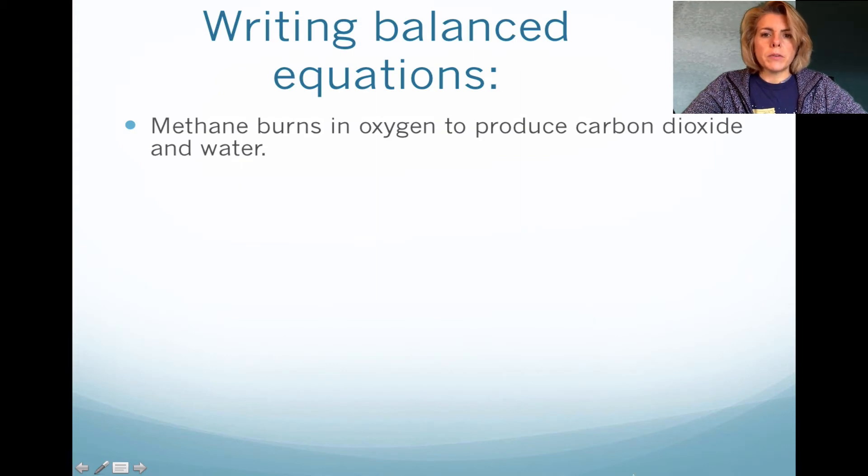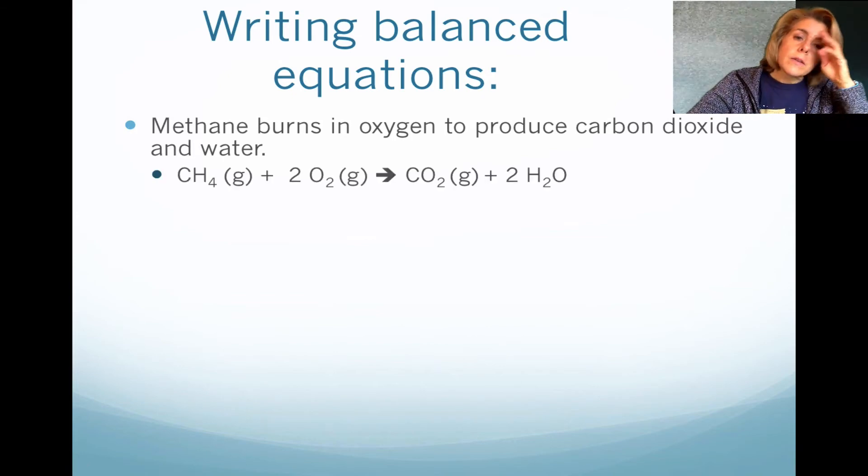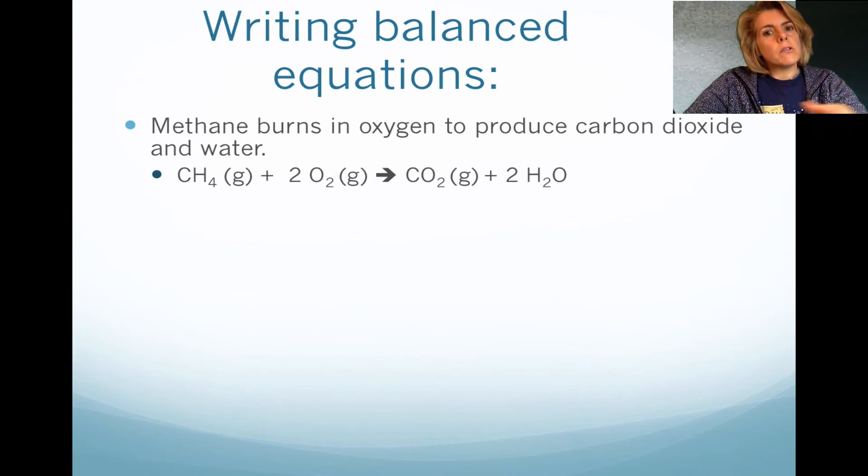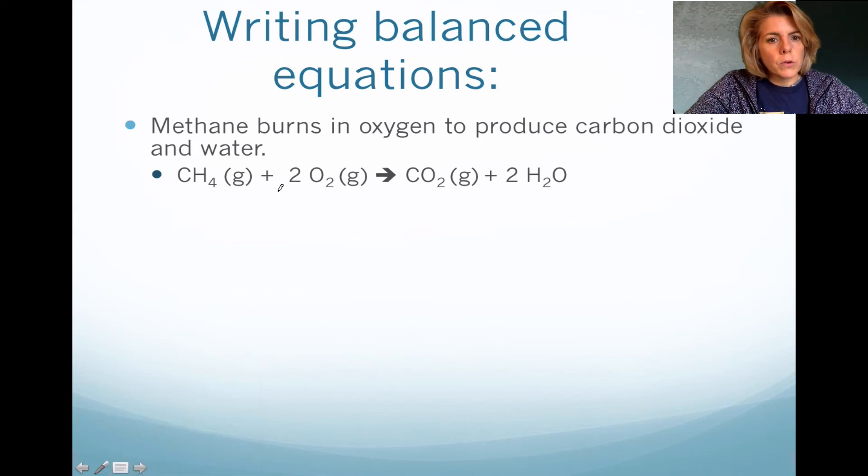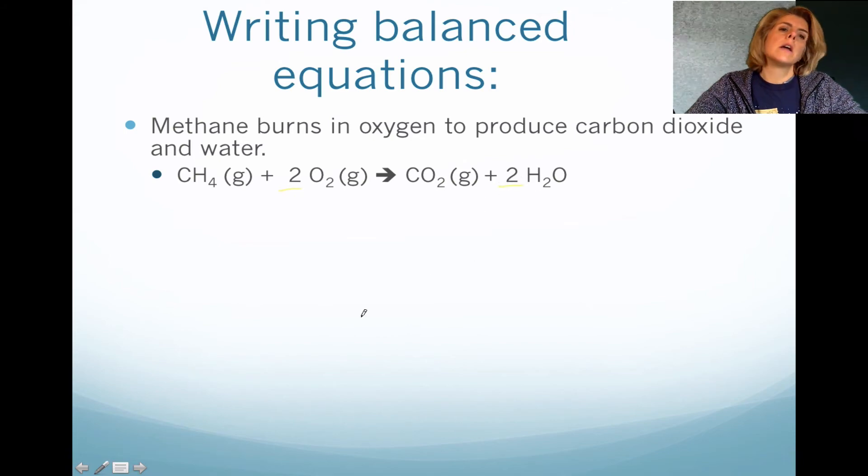Here's an example. So methane burns in oxygen to produce carbon dioxide in water. So I could give this to you on a quiz. And you would have to write the skeleton equation. Now, initially, you would not have this 2 in front of oxygen or this 2 in front of water. You probably would just have methane, oxygen, carbon dioxide, and water. And in order to balance it, notice that there are 4 hydrogens here. And as a result, you have to put a 2 in front of water to get 4 hydrogens here.